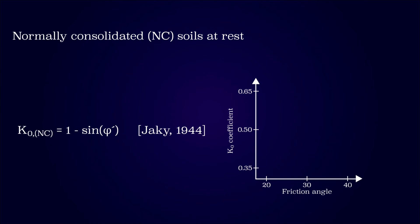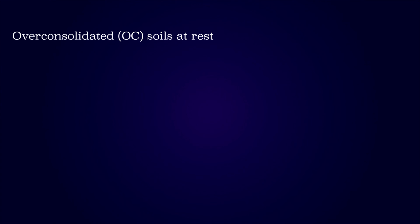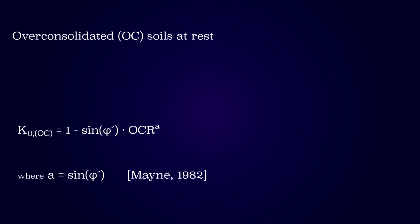Soils with a higher friction angle have a greater ability to resist shearing, which translates into a lower lateral earth pressure at rest. For overconsolidated soils, the earth pressure coefficient is usually determined by the recognized Mayne and Kulhawy formula. Besides the effective friction angle, this is also based on the overconsolidation ratio and a rebound parameter. They found that the rebound parameter should be described by a sine function to have the best fit with the test data.